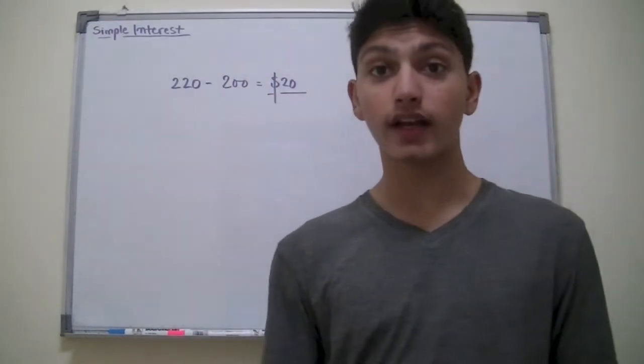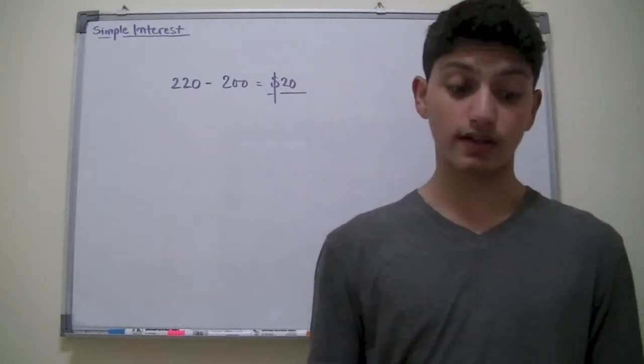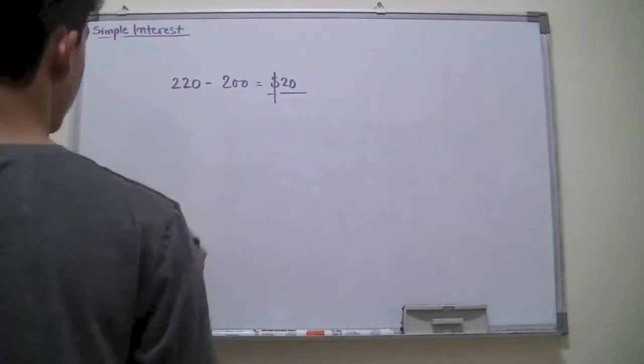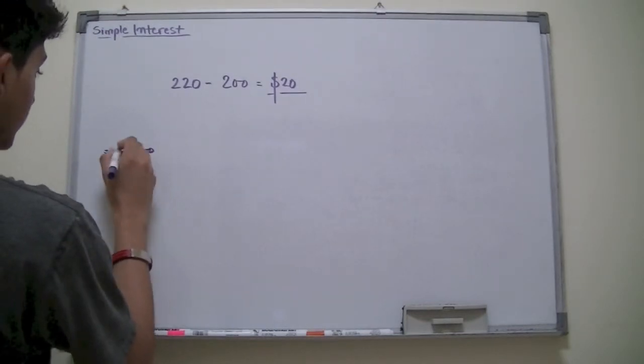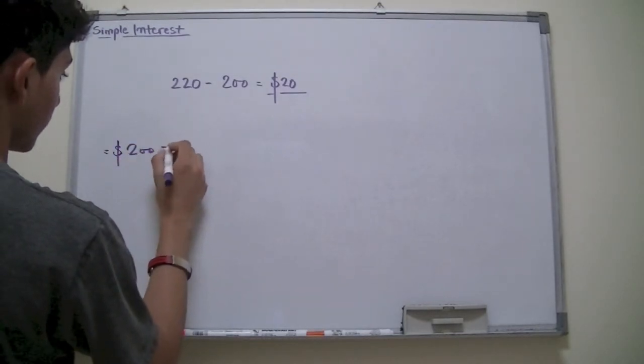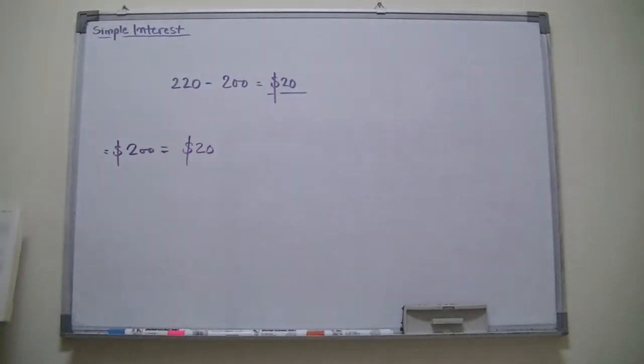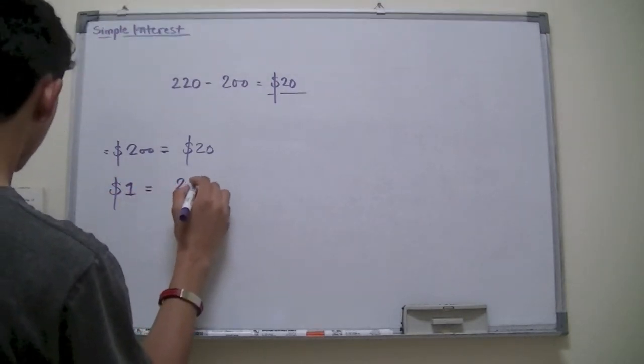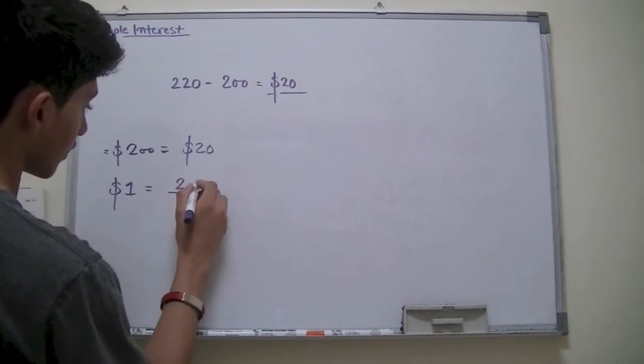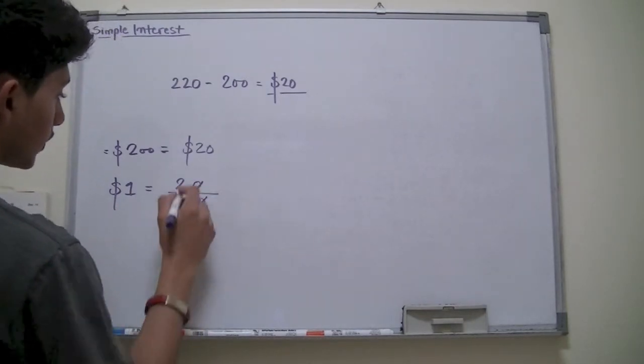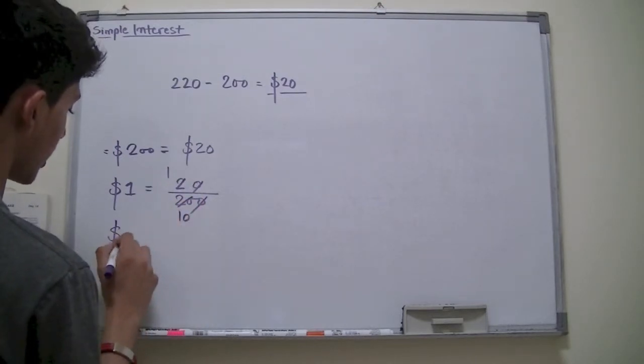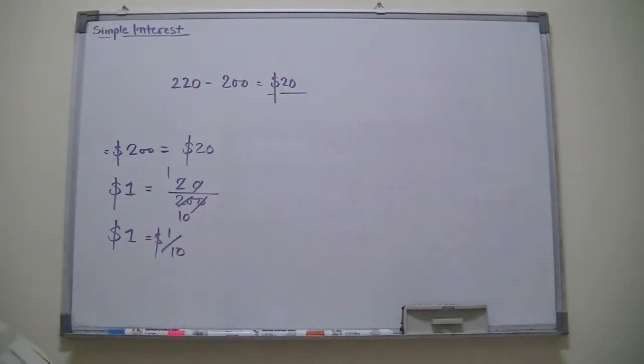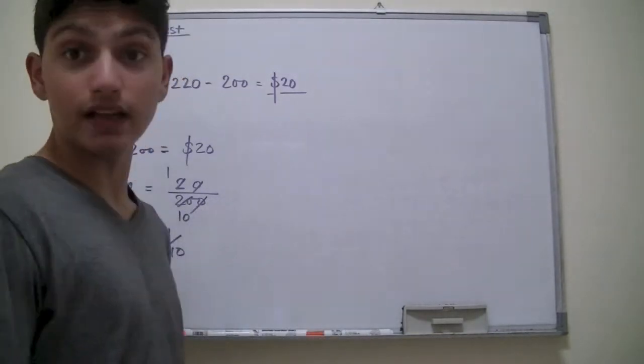Now interest is calculated per $100, which is known as percentage. In our case, we have $200 interest which is $20. So for $1 we would have $20 over $200, which equals $1 over $10 interest.